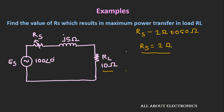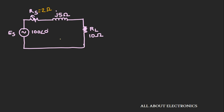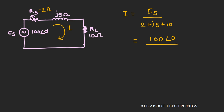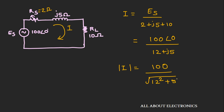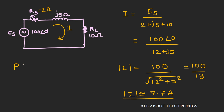Now let's find the maximum power delivered across RL. The current I in the circuit is I = Es / (2 + j5 + 10) = 100 / (12 + j5). The magnitude of I is 100 / √(12² + 5²) = 100 / 13 ≈ 7.7 A. The power P across RL is I²·RL = 7.7² × 10 ≈ 593 W.